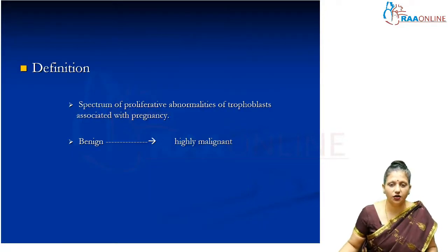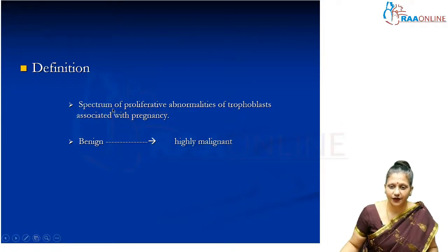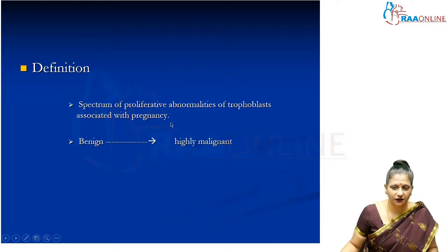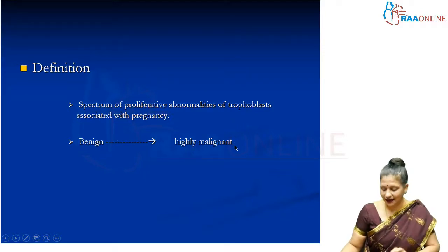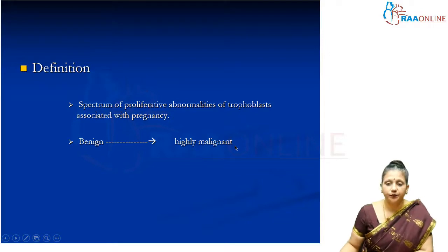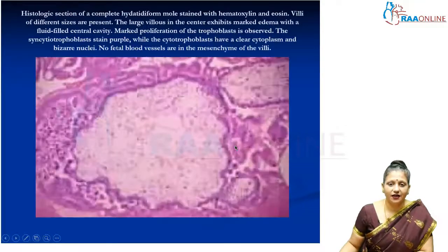The definition of gestational trophoblastic disease is a spectrum of proliferative abnormalities of the trophoblast associated with pregnancy, and it can range from a benign to a highly malignant and invasive condition.